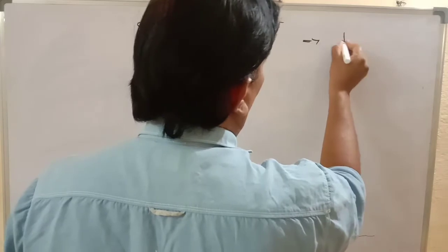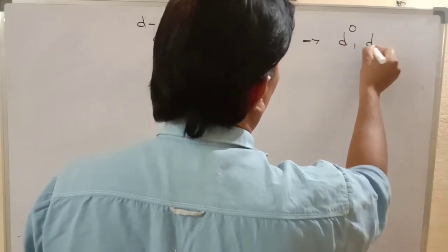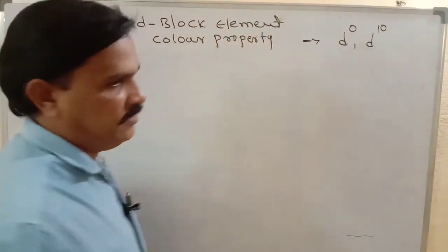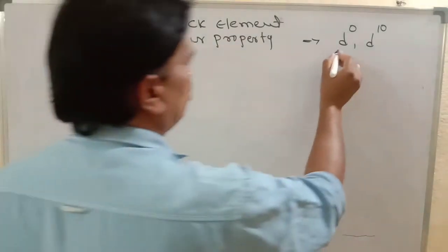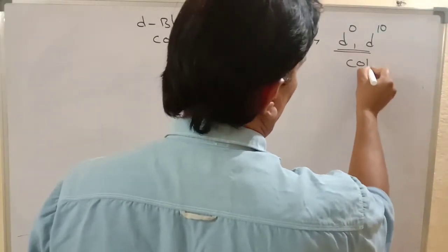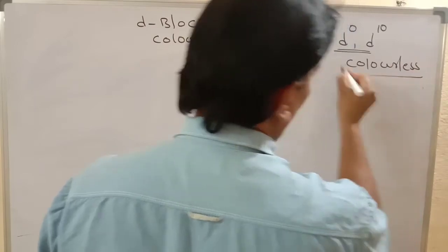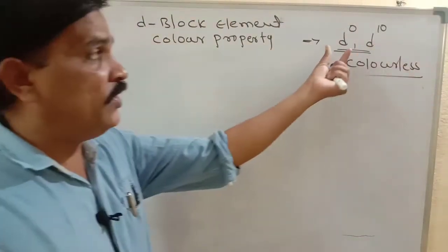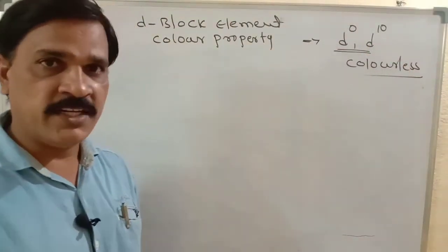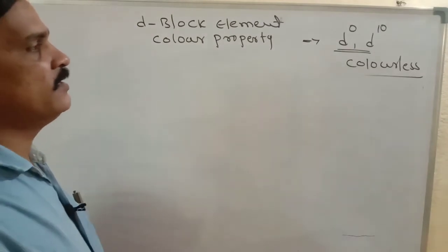Anywhere, if you identify D-0 or D-10 electronic configuration in any element, they are definitely colorless. Remember that. In a given option, if D-0 or D-10 electronic configuration is there, that compound is definitely colorless.